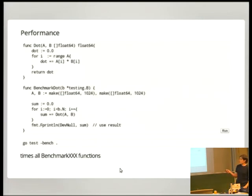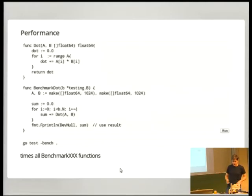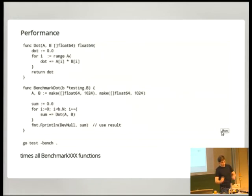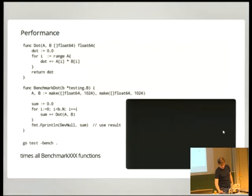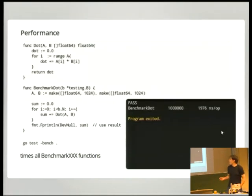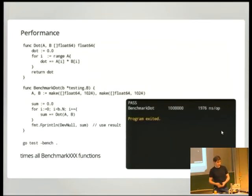You write a benchmark function — it has to start with 'Benchmark' — that sets up inputs and calls the function a number of times. Then you execute 'go test -bench' and it scans through your source, finds all functions called Benchmark-something, and properly times them in a statistically meaningful manner. It called our function 100,000 times to get an average runtime of about 2 microseconds per operation.